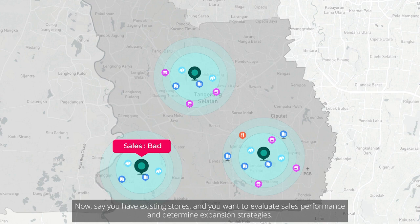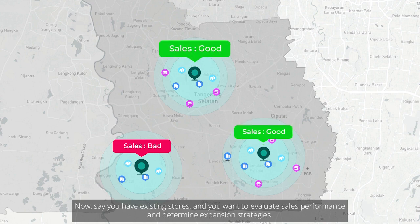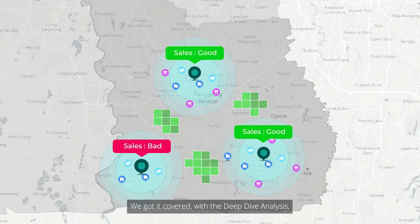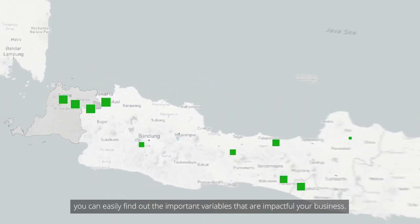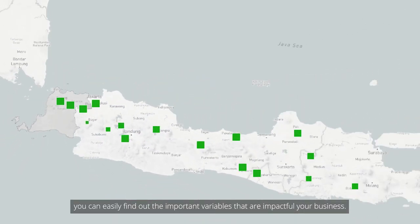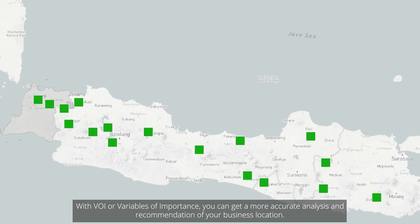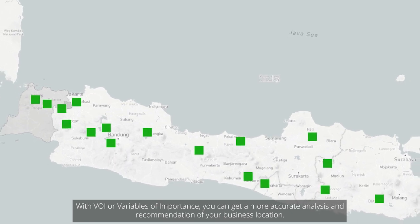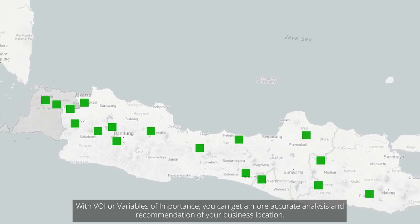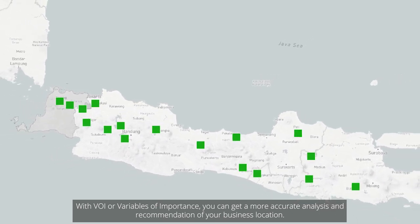Say you have existing stores and you want to evaluate sales performance and determine expansion strategies — we've got it covered with the deep dive analysis. You can easily find out the important variables that are impactful for your business. With VOI, or variables of importance, you can get a more accurate analysis and recommendation for your business location.